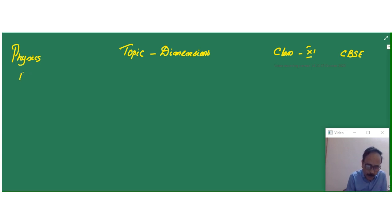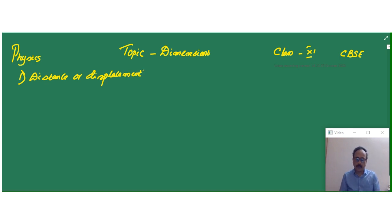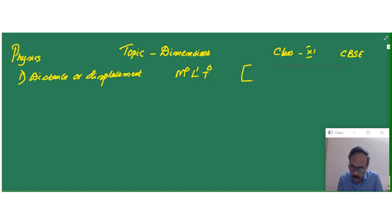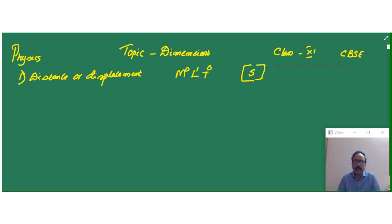The first term is distance or displacement. We know that displacement is nothing but simply a length. Therefore we can write L to the power 1, with T0 because only the length term is there — no mass term, no time term. Therefore the dimensional formula for displacement or distance is M0 L1 T0. The dimensional formula is represented with square brackets, and within the square bracket we write the symbol of that physical quantity. Here distance or displacement is represented by S.